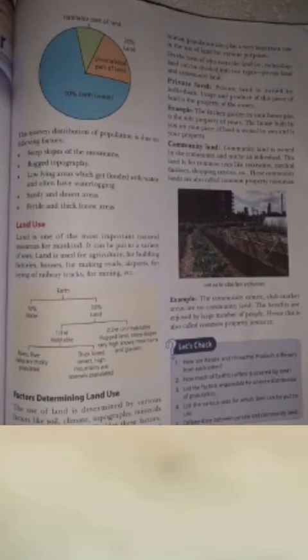On the basis of who owns the land is ownership. Land can be divided into two types: private land and community land. First, private land. Private land is owned by individuals. Uses and produce of this piece of land is the property of the owner. For example, the kitchen garden is the sole property of us. The house built by us on our piece of land is owned by us and is our property.